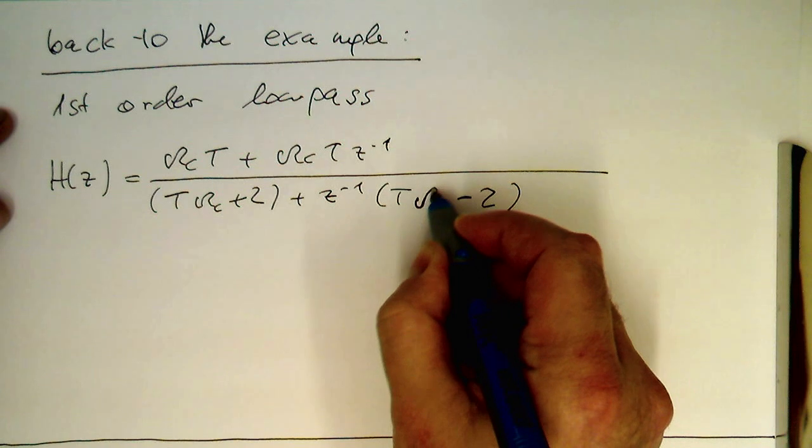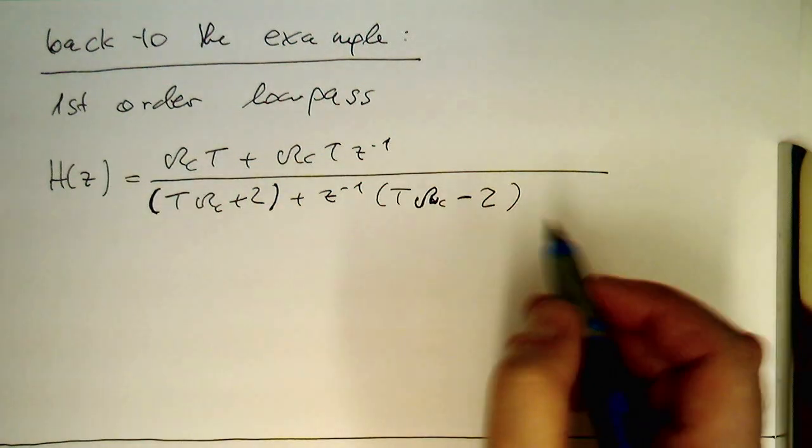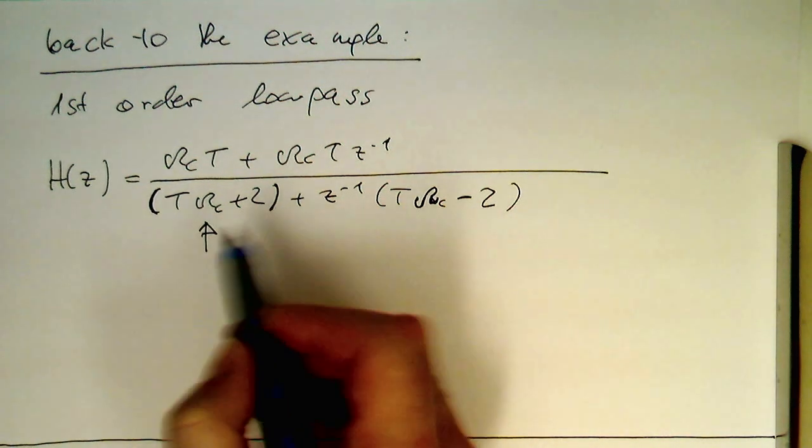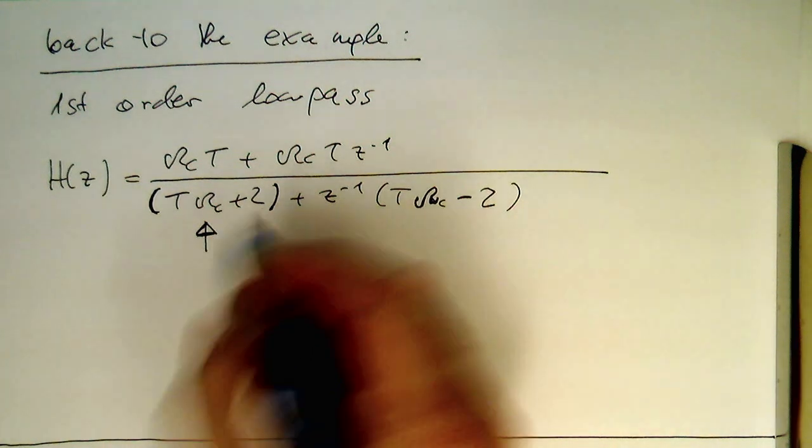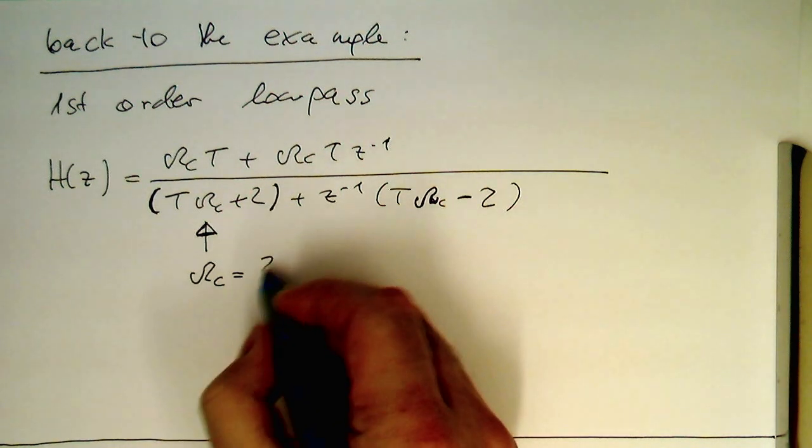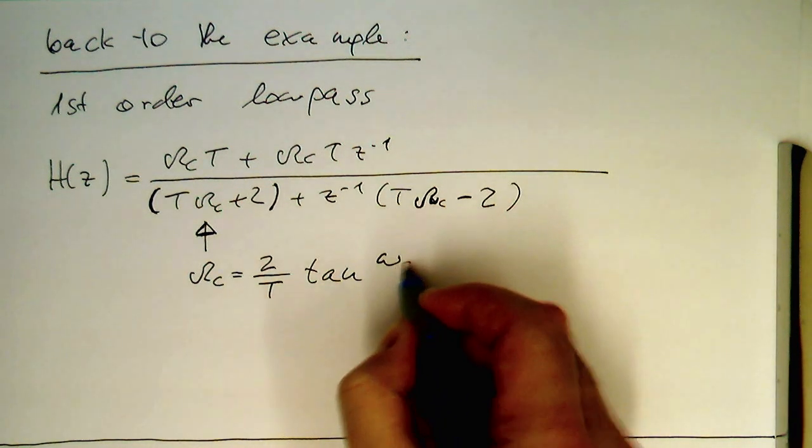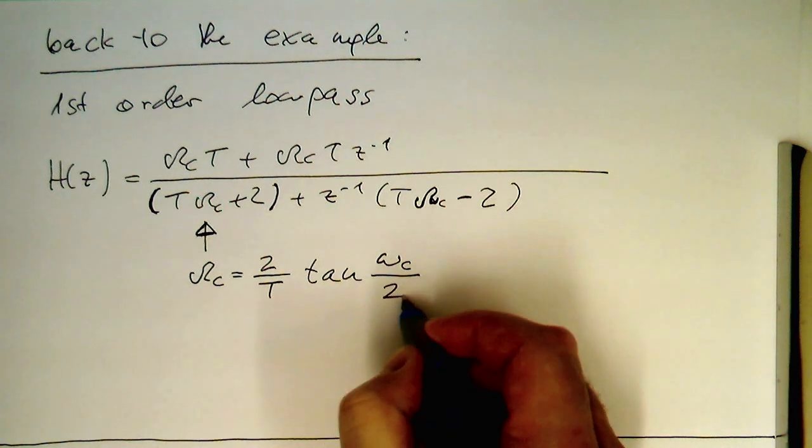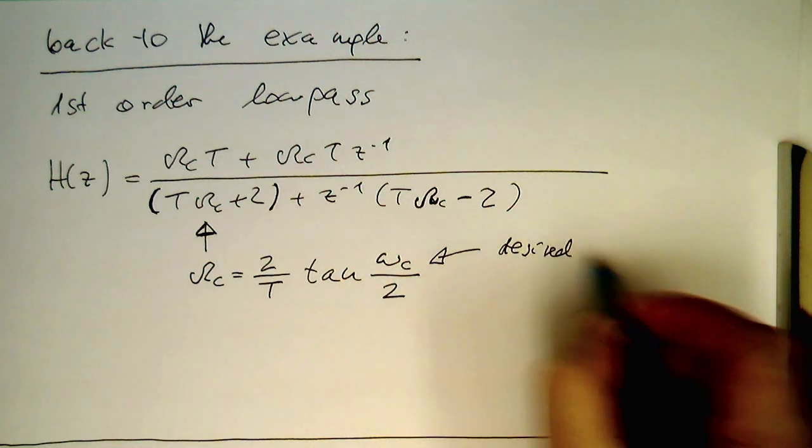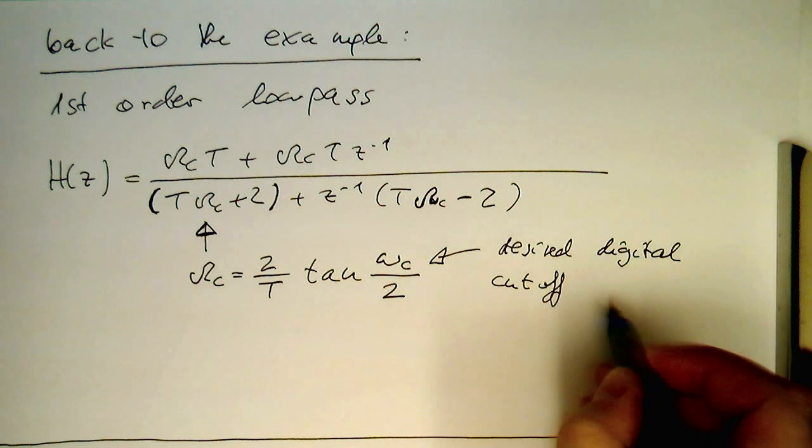Just to use this formula, which is a bit shorter than the final solution. Here we've got this omega_c, and to get our digital frequency, we're just replacing omega_c with the formula 2/T tangent(omega_c/2). Therefore, this is our desired digital cutoff frequency.